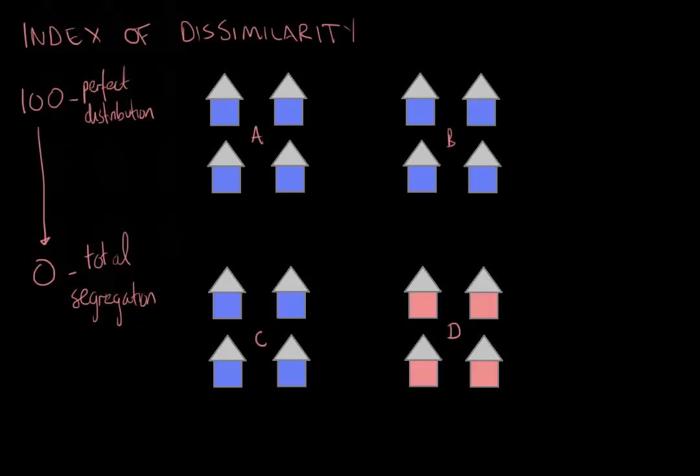However, if we change this up a little bit and actually disperse the red people up into different neighborhoods and disperse the blue people, we would actually be much closer to that perfect distribution. So this is an example of one of the measures that is commonly used to measure this residential segregation.